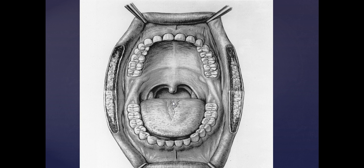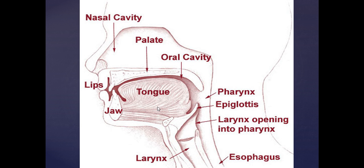Let's advance further back. Here we see all the same things we just saw — our hard palate, our soft palate — and then we get back to our pharynx. Once we get down into our pharynx view, we're going to see a few new structures.